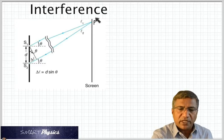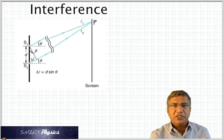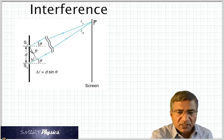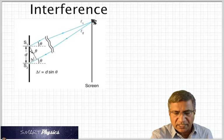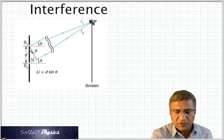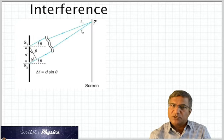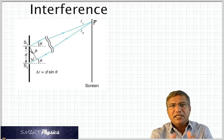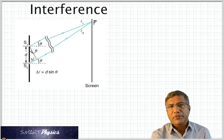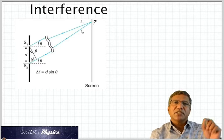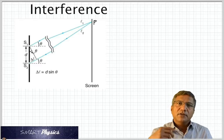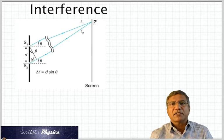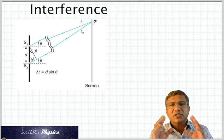But as you shift away and come to a point like P, you could again get maxima. Because this time, the sixth crest from S1 may happen to fall on the seventh crest from S2. That means the path difference between them is one wavelength or lambda. But what if the sixth from S1 falls on the eighth from S2? Now the path difference is two times the wavelength.